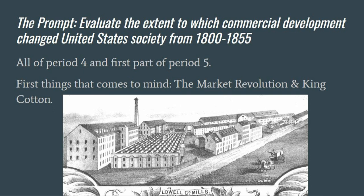Let's first take a look at the prompt itself: evaluate the extent to which commercial development changed United States society from 1800 to 1855. The first thing that came to my mind was that this is the second year in a row that a DBQ prompt is centered on period four, and this one goes a little into period five as well. The topic lends itself to a discussion of the market revolution and the growth of cotton plantations in the Deep South.